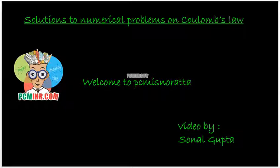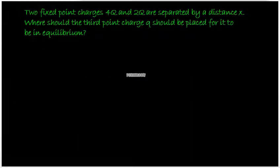Hello and welcome to PCMS Murata. You're watching Solutions to Numerical Problems on Coulomb's Law by Sonal Gupta. The question says: two fixed point charges 4Q and 2Q are separated by a distance x. Where should the third point charge Q be placed so that it is in equilibrium?